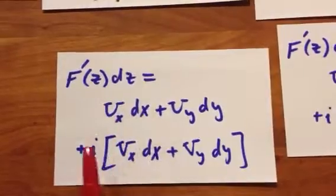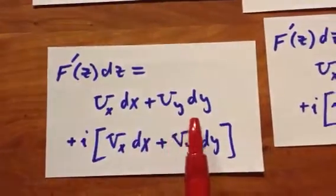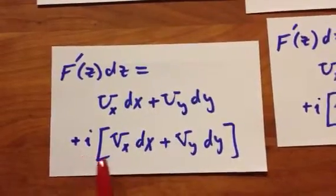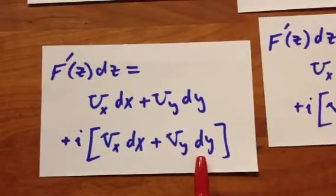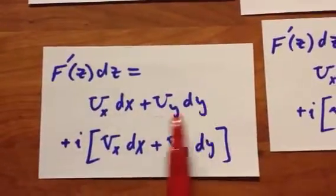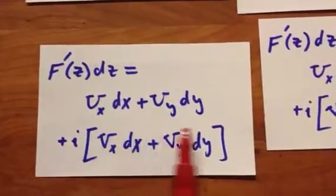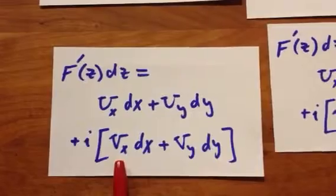So F prime of z dz equals U_x dx plus U_y dy plus i times the quantity V_x dx plus V_y dy. Now think about where you have seen this before in your previous courses. Let's do this. Next question.